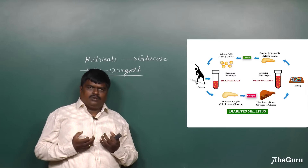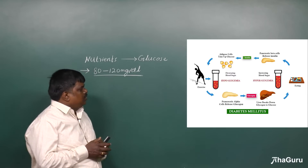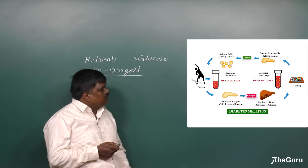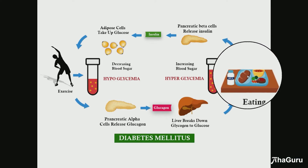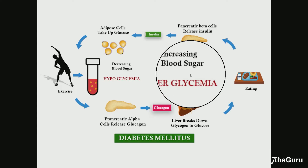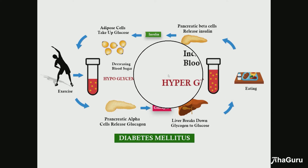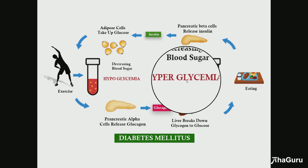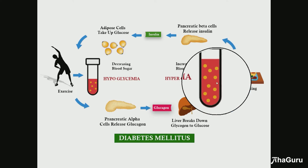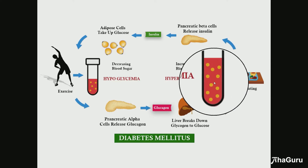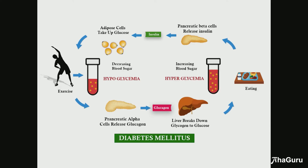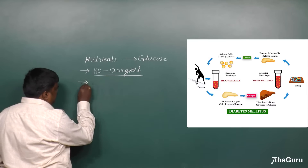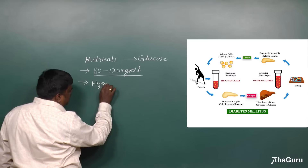When we are eating food — for example, you can see it here — you are eating a very good, healthy food. Naturally, what will happen is the blood glucose level will increase. We call that as hyperglycemia. In the blood, the glucose level increases. Whenever the blood glucose level increases, we call it as hyperglycemia.